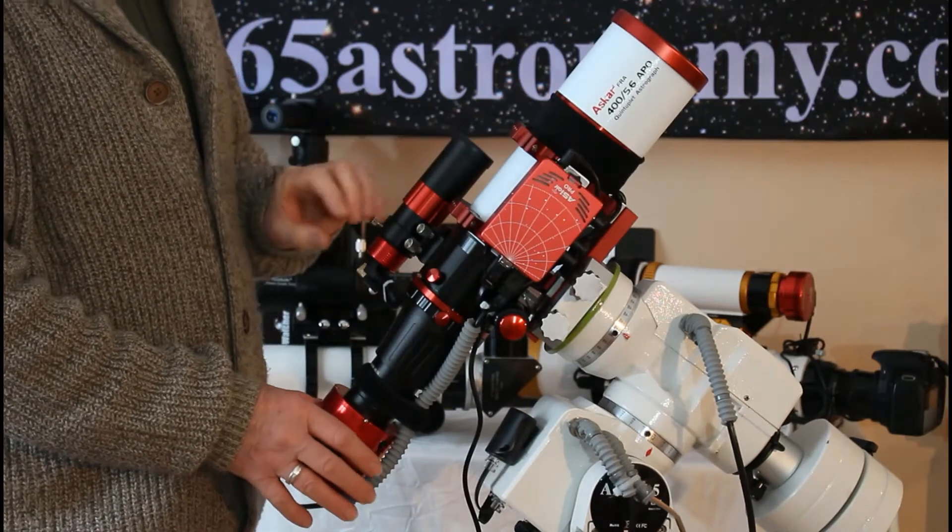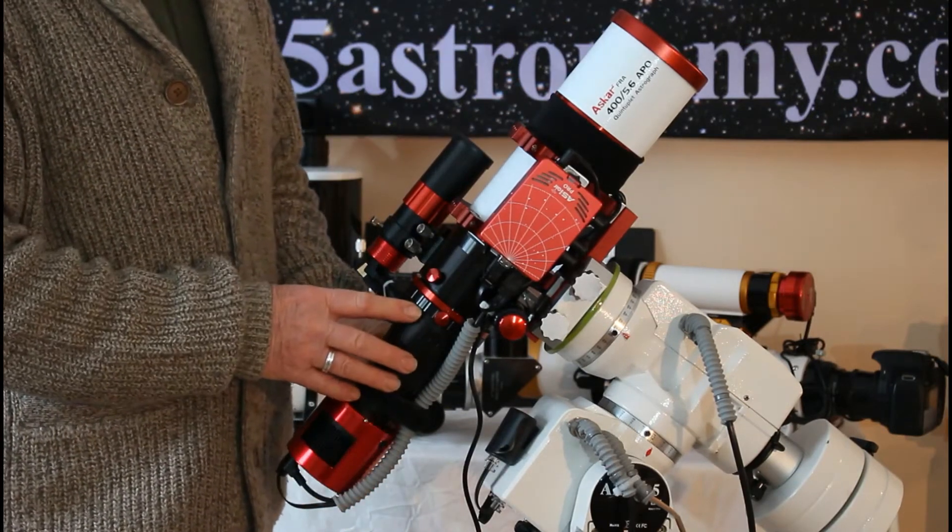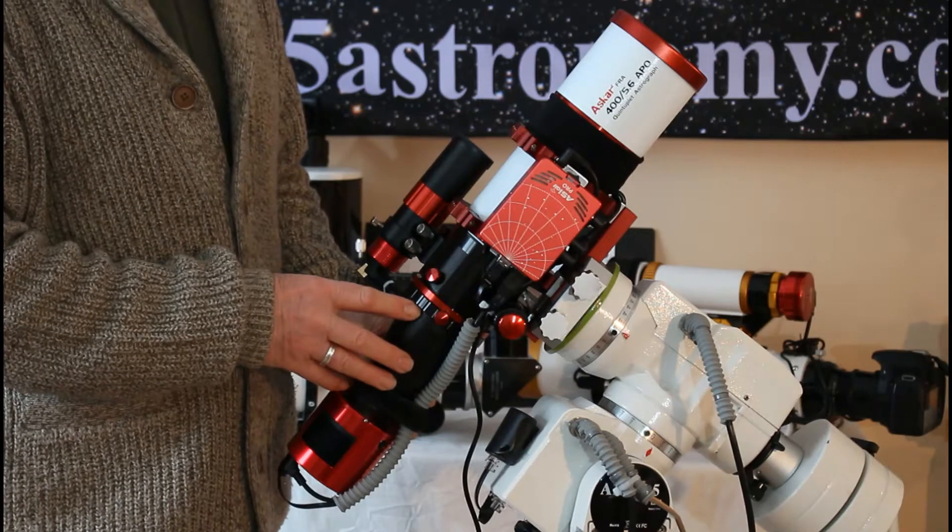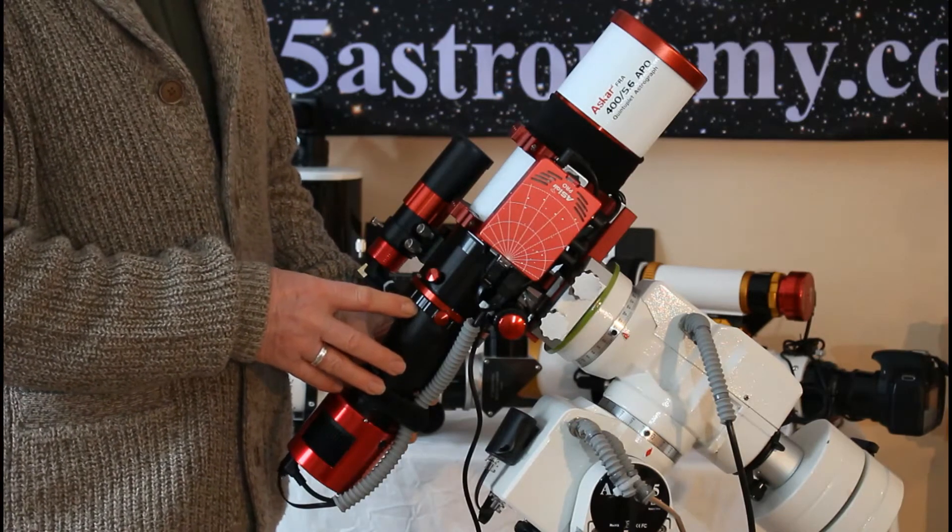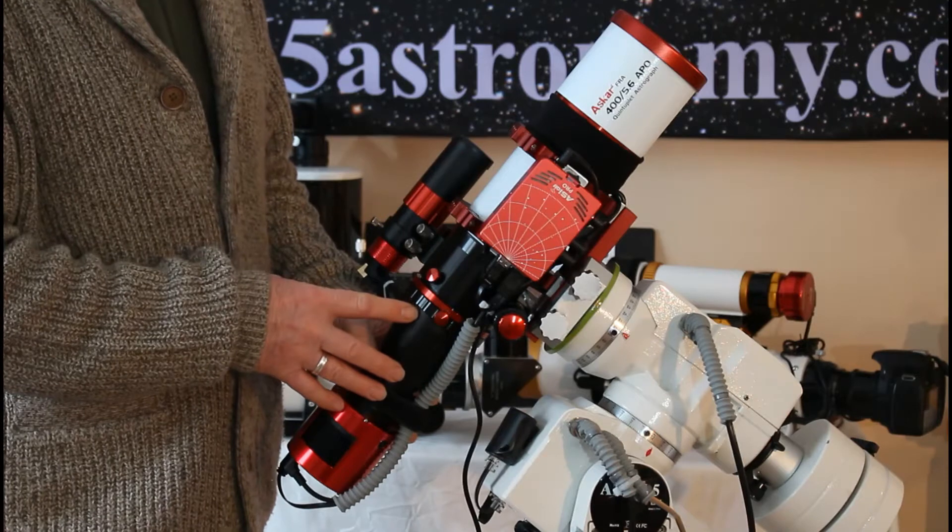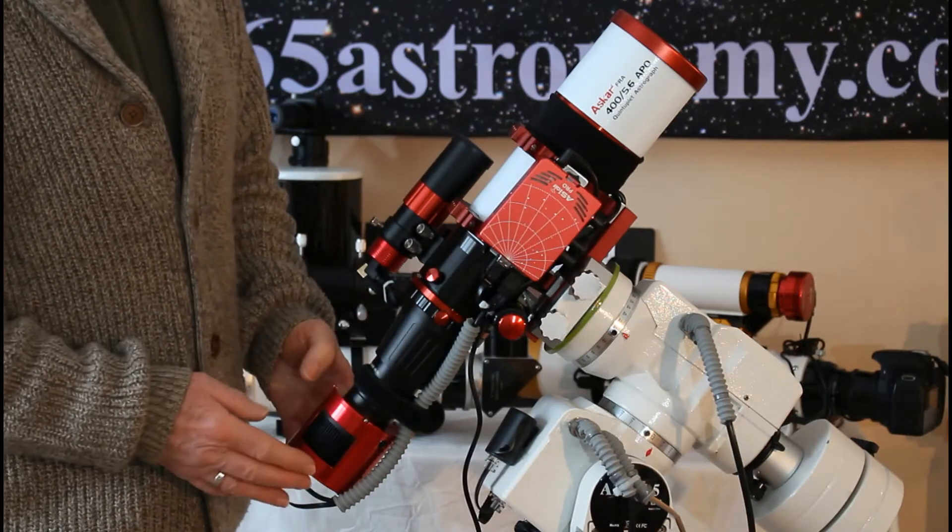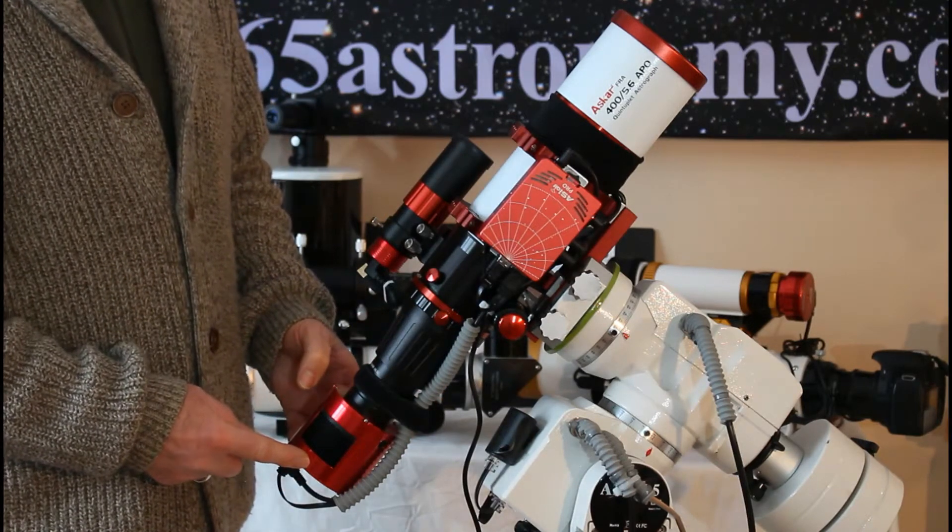And in this particular case, the telescope also has a built-in field flattener. The idea being that this can be used with large sensor cameras, DSLRs and cameras like the ZWO camera here we've got.